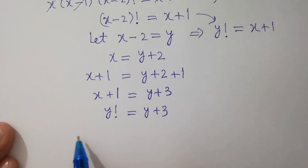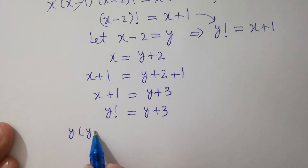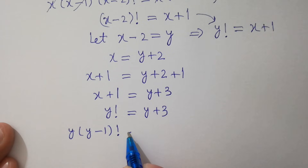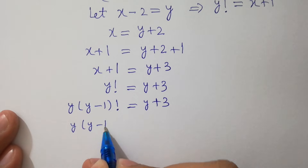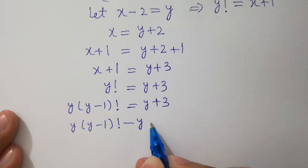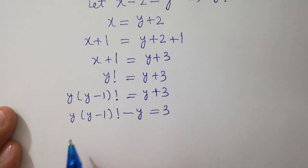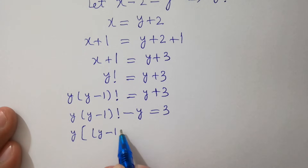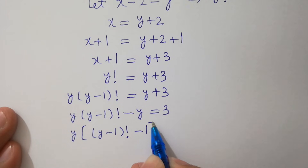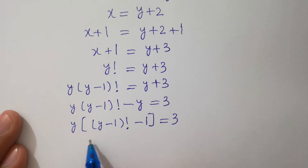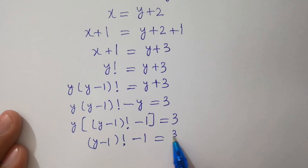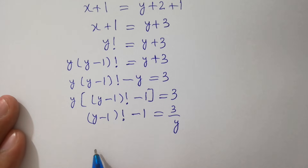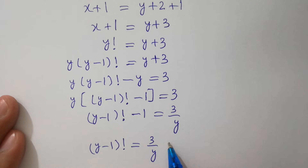Expanding: y factorial equals y times (y minus 1) factorial equals y plus 3. Rearranging: y times (y minus 1) factorial minus y equals 3. Factoring out y: y times [(y minus 1) factorial minus 1] equals 3. So (y minus 1) factorial minus 1 equals 3 over y, which gives (y minus 1) factorial equals 3 over y plus 1.